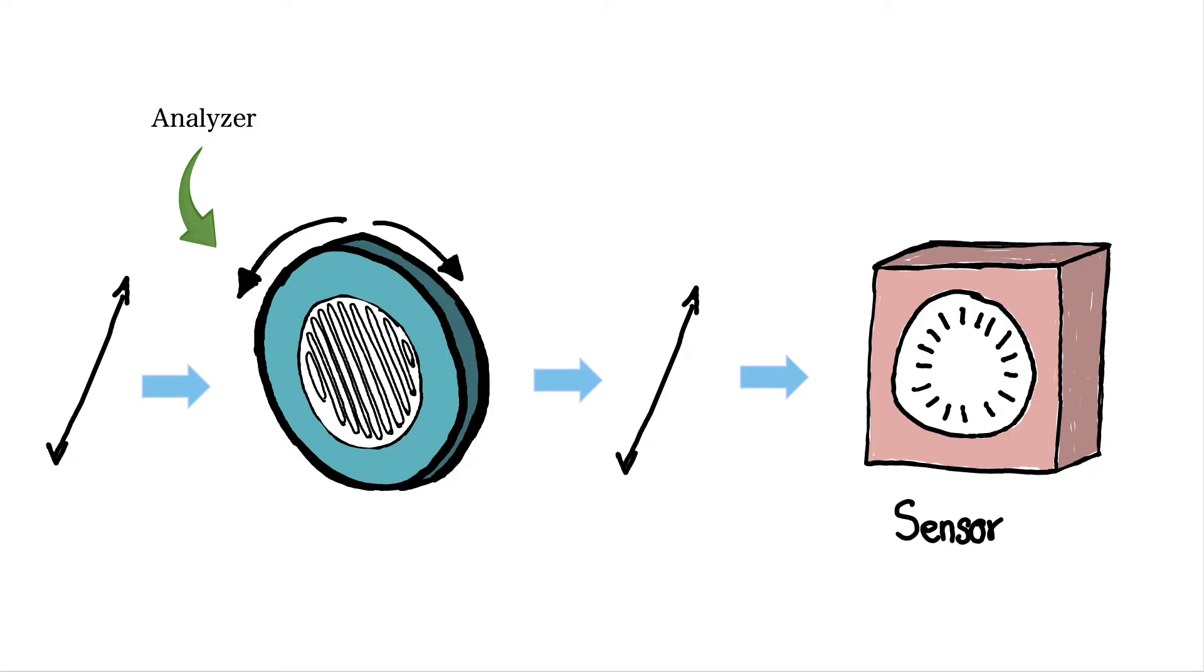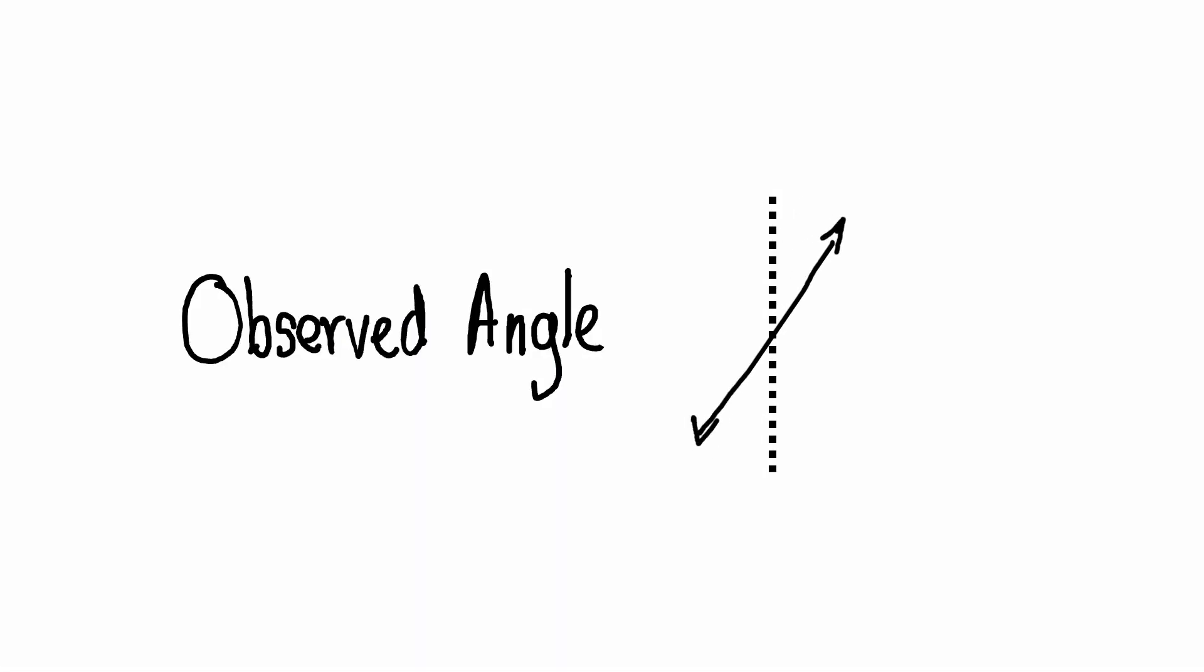Behind the analyzer, there is a light sensor. This sensor detects the intensity of light passing through the analyzer. The angle at which the light passes through completely is then measured. This angle is recorded as the observed rotation of the plane polarized light passing through the chiral sample.